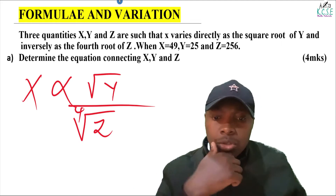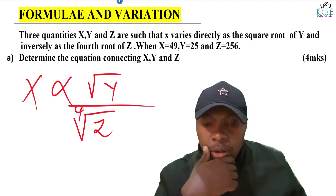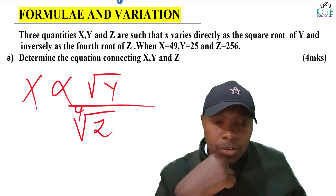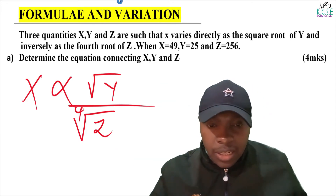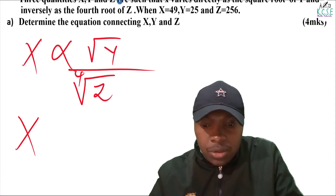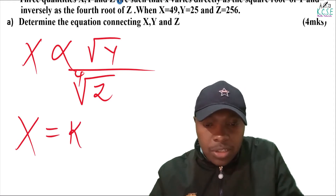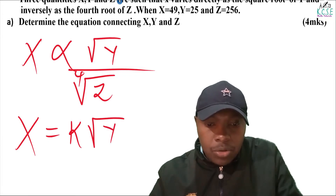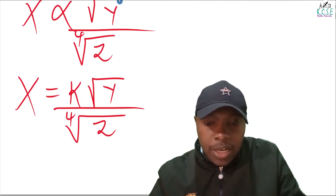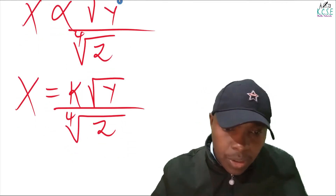The next thing is to write the equation involving a constant. Now we're going to introduce a constant k — you can use any letter as a constant. So x equals k multiplied by the square root of y, divided by the fourth root of z.